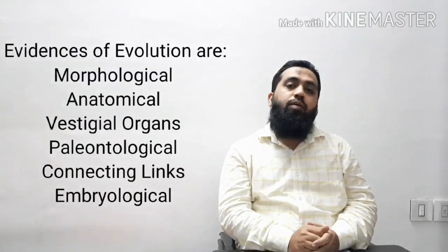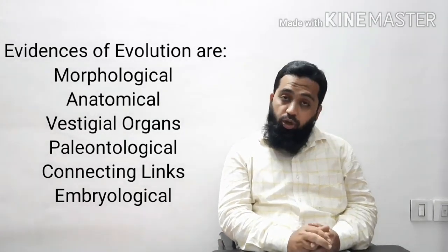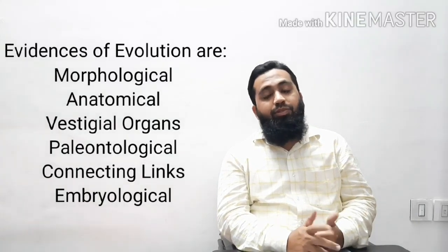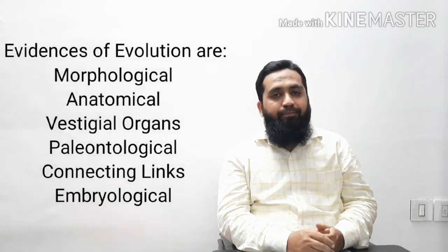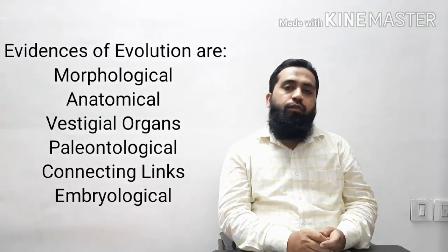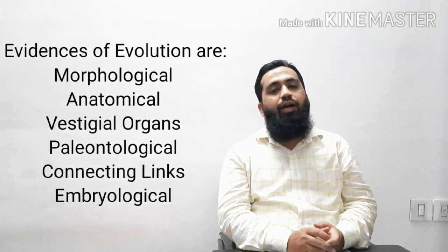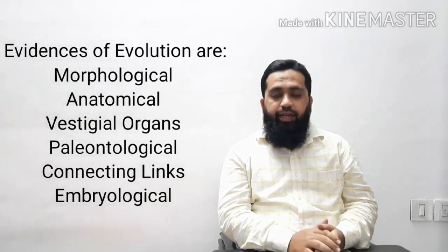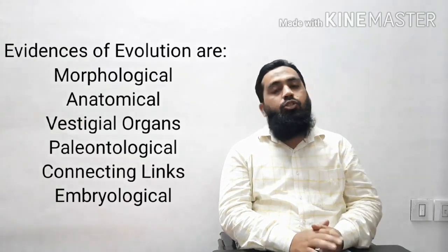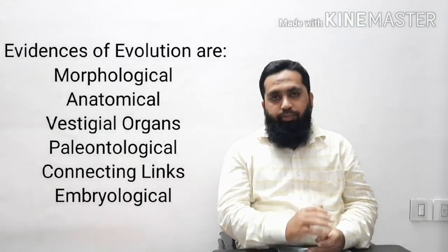The first evidence: morphological evidence. Second: anatomical evidence. Third: vestigial evidence. Fourth: palaeontological evidence. Fifth: connecting links. And the sixth one: embryological evidence. So today we are going to discuss all these evidences one by one.